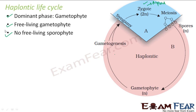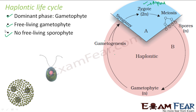Most algae — like Chlamydomonas or Volvox — follow this haplontic pattern where the gametophyte is the dominant, free-living, independent, photosynthetic phase and is not dependent on anyone else for survival. The sporophyte, however, is dependent on the gametophyte.